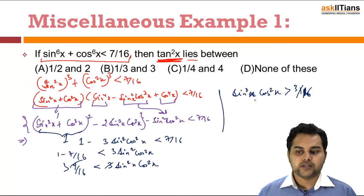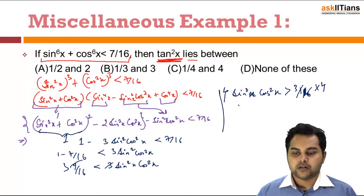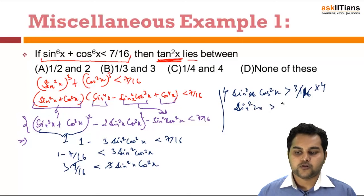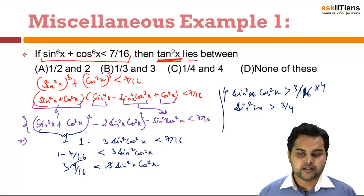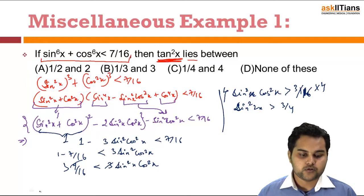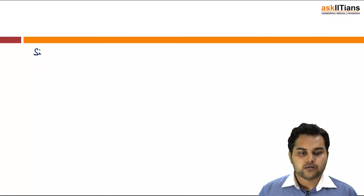I will convert this into a sin(2x) term. Multiplying both sides by 4, I get sin²(2x) > 3/4. I proceed with this equation: sin²(2x) > 3/4.